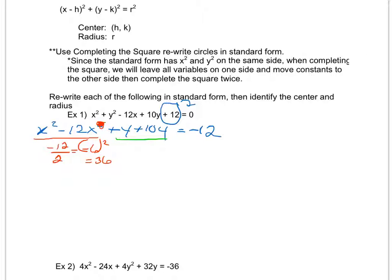I'm going to do the same thing with my linear term for my y's. So I'm going to take 10 divide by 2. I get 5. I'm going to square that and I get 25. So now I'm going to add both the 36 and the 25 to both sides.